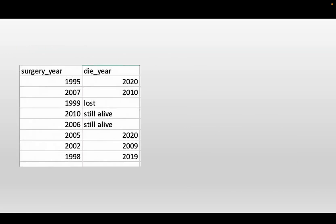Before we start, let's take a look at our dataset. The dataset is very simple. It contains two columns: the surgery year and the die year. This dataset is about patients — when the patient got surgery and when the patient died. During our observation period, we sometimes lost records, and in some cases the patients are still alive. So we have multiple situations going on here, and based on this dataset, we are going to learn how to create the survival curve.